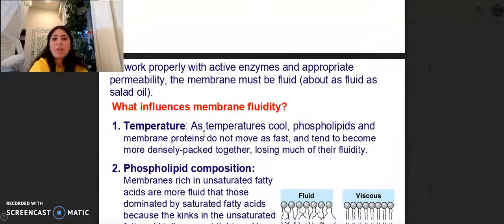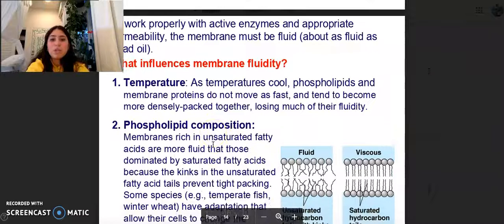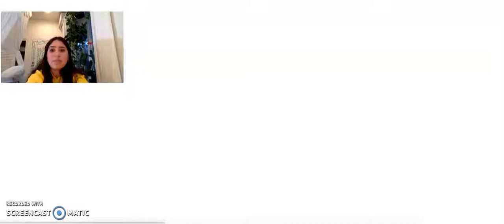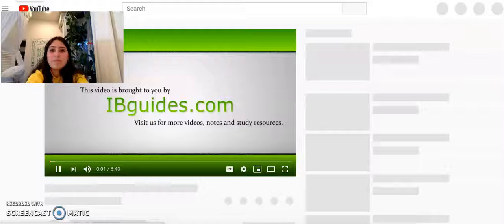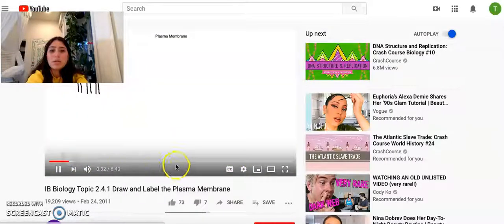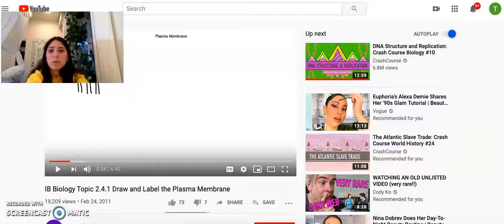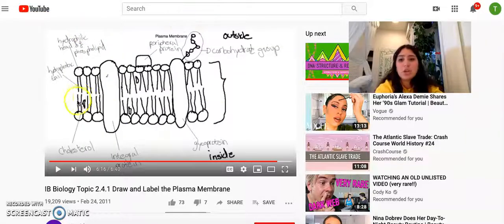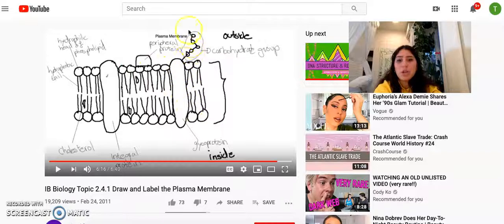To work properly with active enzymes and appropriate permeability, the membrane must be fluid, as fluid as salad oil. If you want to learn how to draw these, then definitely watch one of these videos. Basically, you're just going to want to have these hydrophilic heads, these hydrophobic tails, and then you're going to want to put these integral proteins in it or some peripheral proteins and then put a glycoprotein. Make sure you add this carbohydrate group, and that's basically it.